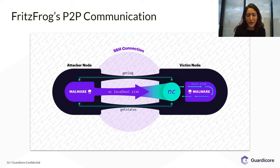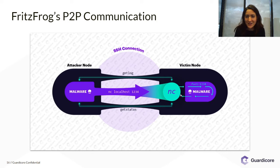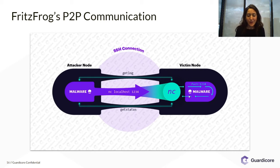What I want to emphasize here is that the netcat client actually runs on the remote victim. So it connects to whoever listens on port 1234 on the victim, which is the malware. Now at this point the attacker node can send any command from the command set we saw before.